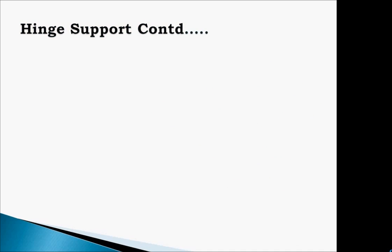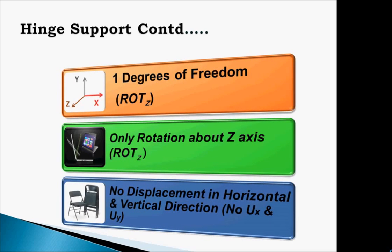Through this diagram, we will give you a clear idea about the degrees of freedom of hinge support. Hinge support has one degree of freedom, and that is rotation, which we can call angular displacement. Note that no horizontal or vertical displacement occurs at the hinge support point.